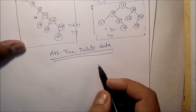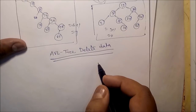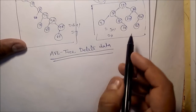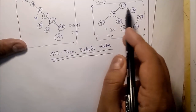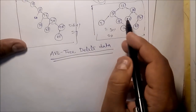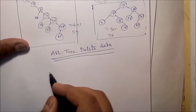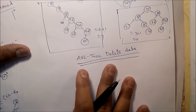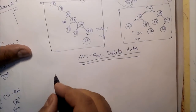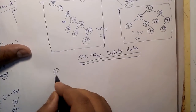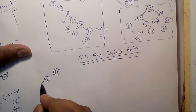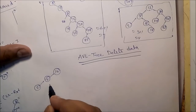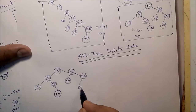AVL tree deletion — node deletion from the AVL tree. You can refer to this particular tree where the nodes are 12, 4, 2, and 82.